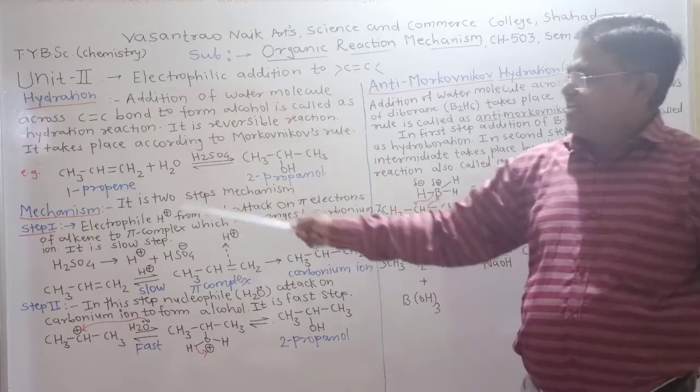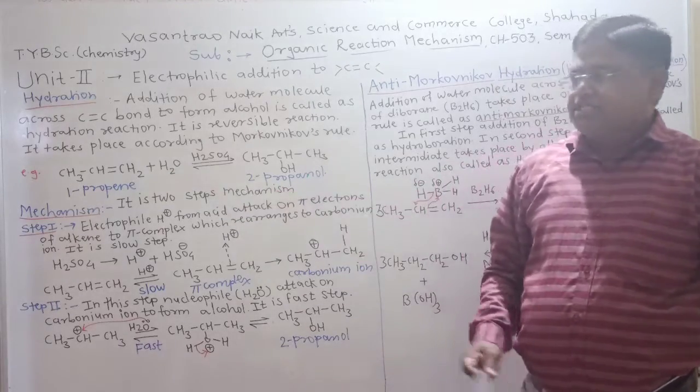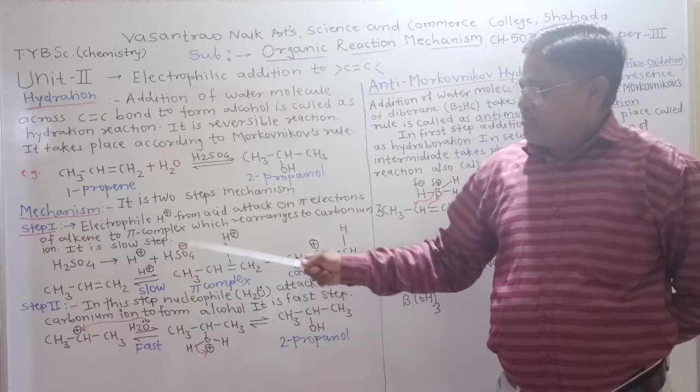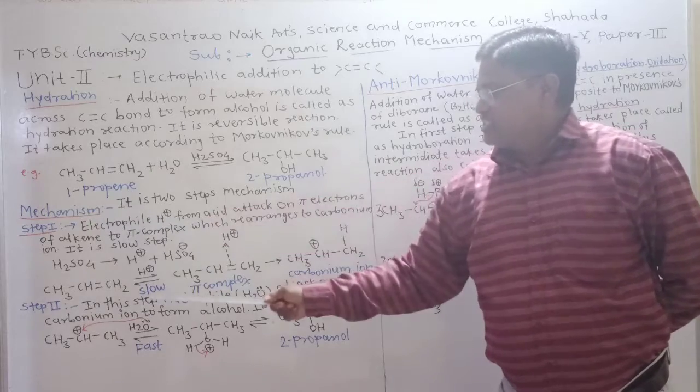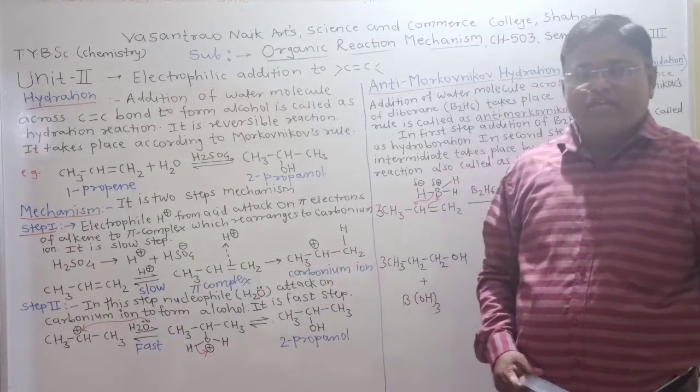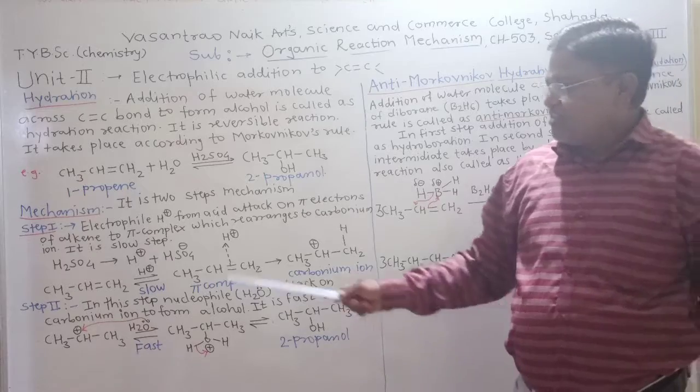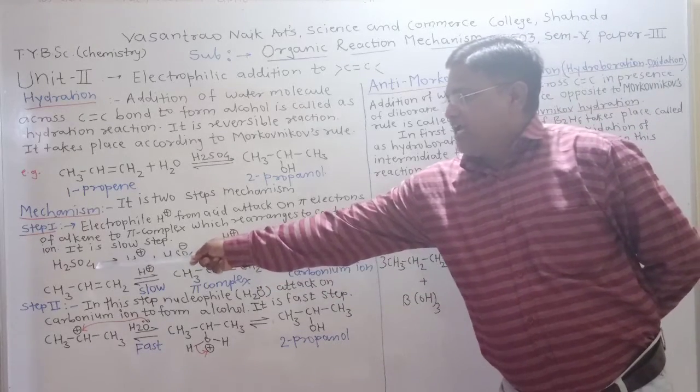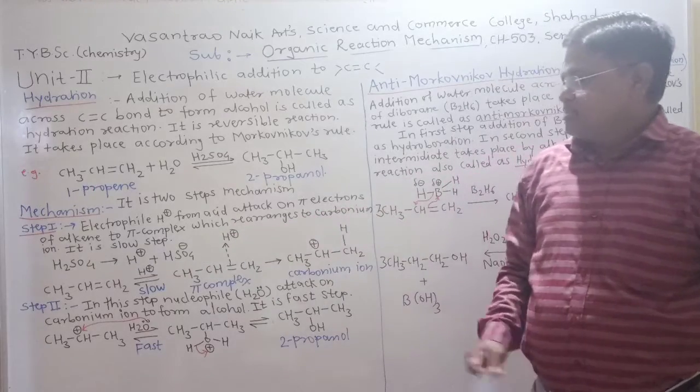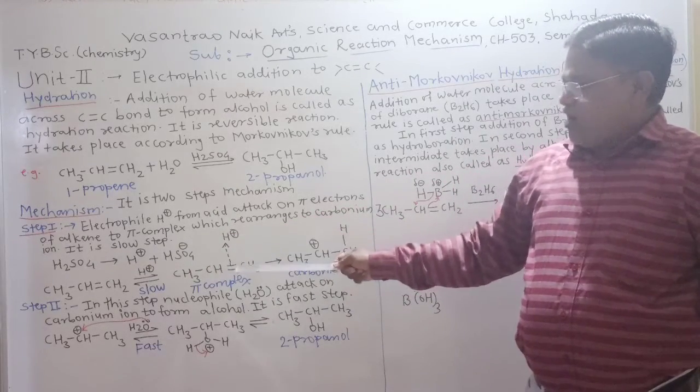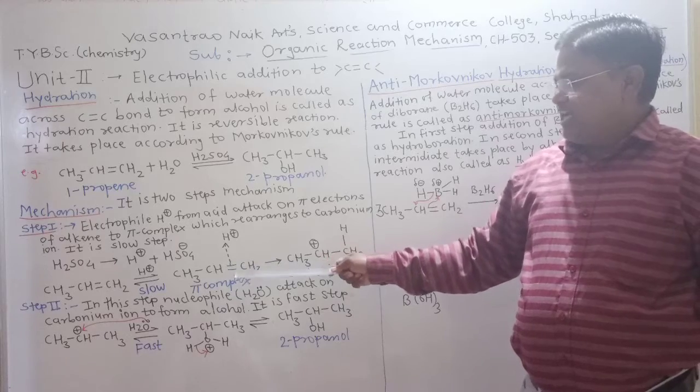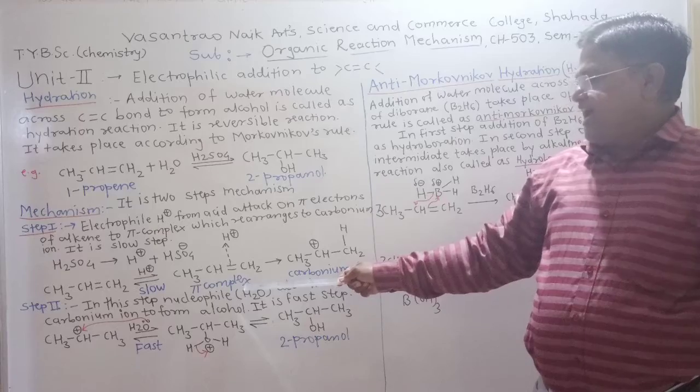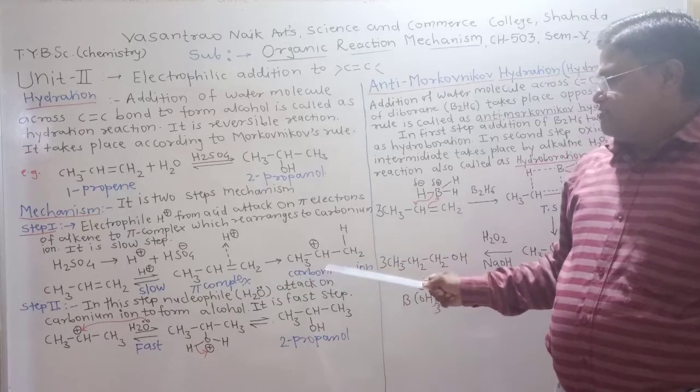Now, the mechanism of this reaction. It is a two-step mechanism. First step is a slow step. In this first step, the electrophile H+ which is obtained from H2SO4 acid attacks on pi-electrons of alkene to form pi-complex. This pi-complex rearranges to form the carbonium ion.